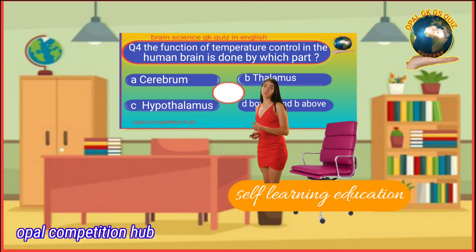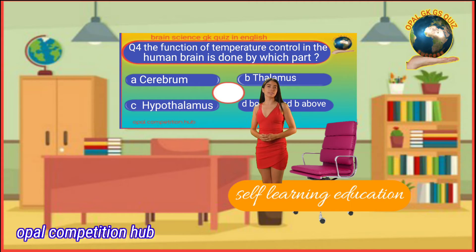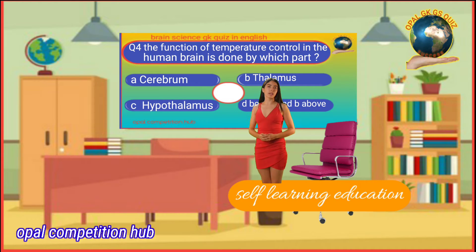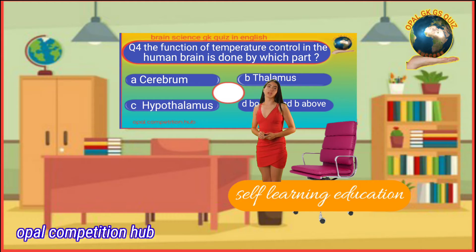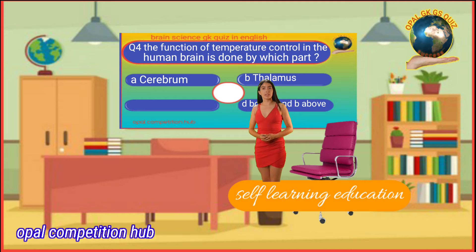Question number 4: The function of temperature control in the human brain is done by which part? Option A: Cerebrum. Option B: Thalamus. Option C: Hypothalamus. Option D: Both A and B. Your time starts now. Your answer will be Option C: Hypothalamus.